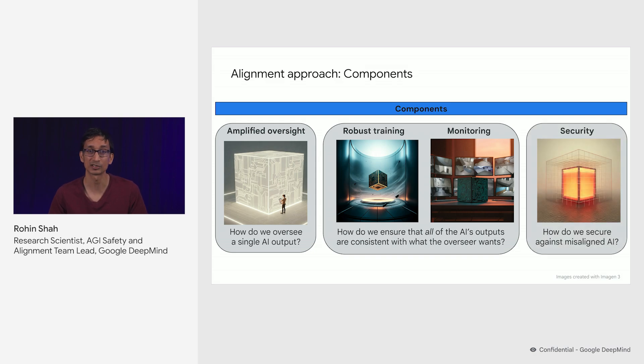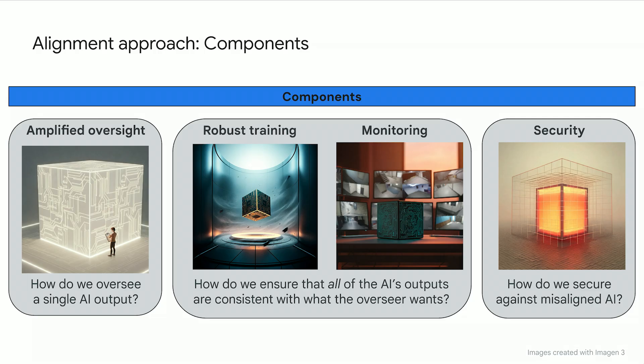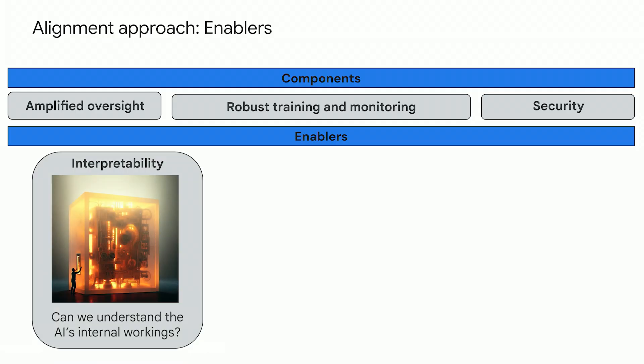But in practice, they're not going to be perfect — they're probably going to fail in some ways. So we want to have defense in depth, where we have further defenses that aim to mitigate the impact even if we do get misaligned AI. For this, we take inspiration from the field of computer security. So while these are the three core ingredients for building safe AI systems, there are a bunch of other research areas or enablers that also contribute. Interpretability helps you understand how the AI system is producing its outputs, and this has a wide variety of potential applications.